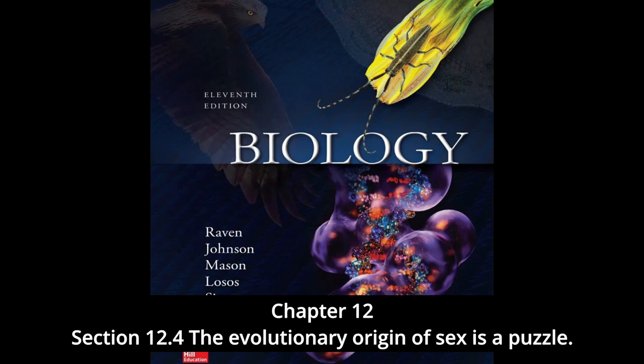Many multicellular organisms are also capable of reproducing asexually. In animals, asexual reproduction often involves the budding off of a localized mass of cells, which grows by mitosis to form a new individual. Even when meiosis and the production of gametes occur, there may still be reproduction without sex. The development of an adult from an unfertilized egg — called parthenogenesis — is a common form of reproduction in arthropods. Among bees, fertilized eggs develop into diploid females, but unfertilized eggs develop into haploid males. Parthenogenesis even occurs among the vertebrates.